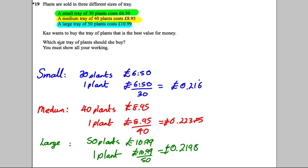And the question is, which should she buy? She wants the best value for money, so we want the price that's the smallest for one plant. So the price that's the smallest for one plant is this one here, 0.216.